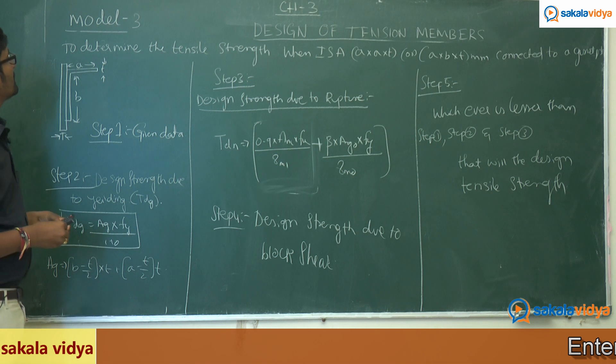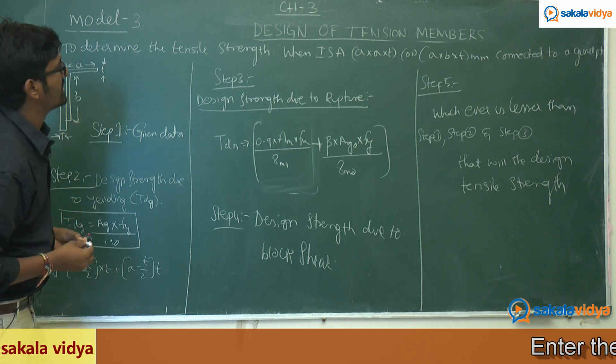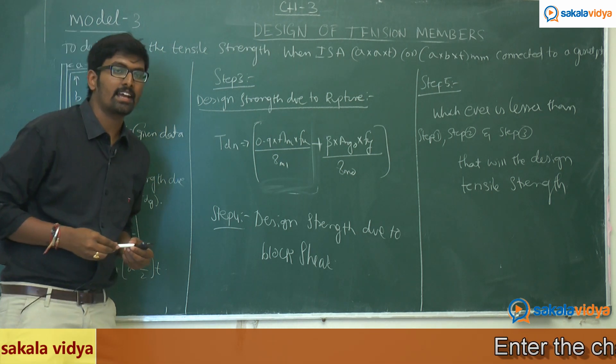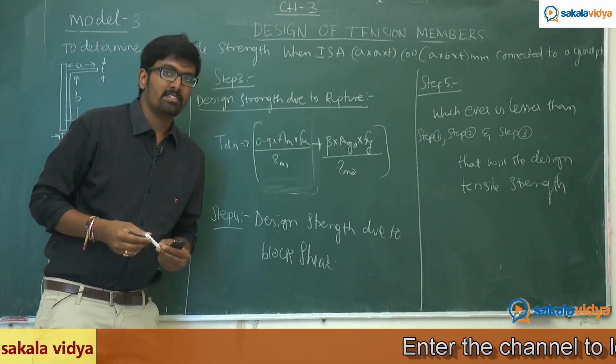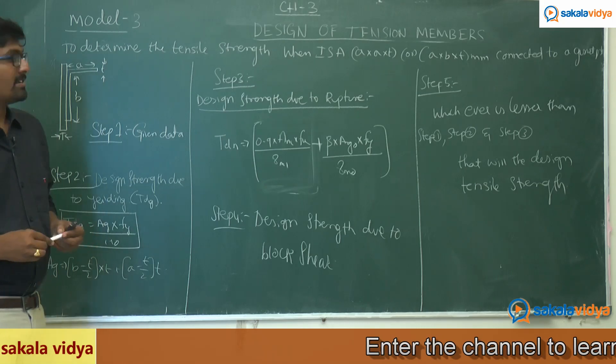The next very important model is to determine the tensile strength when ISA, Indian Standard Angle Section, whether it may be equal or unequal angle, is connected to a gusset plate by using fillet weld. We need to find the design tensile strength.